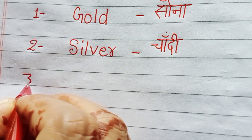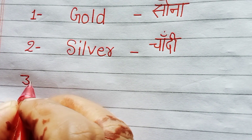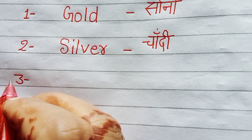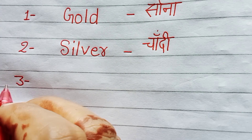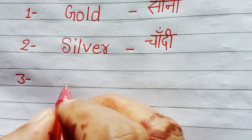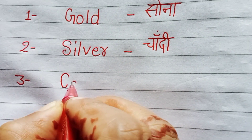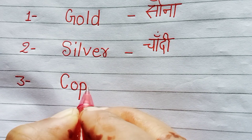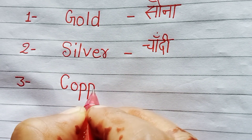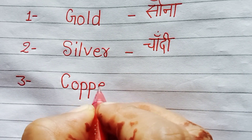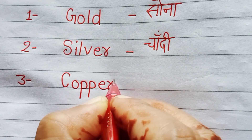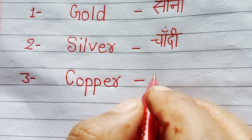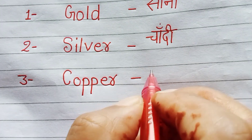3rd number is Copper. C, O, P, P, E, R. Copper. Copper means Tamba.